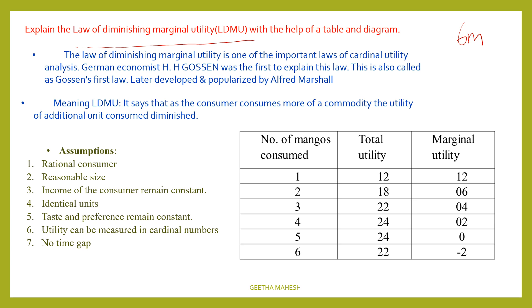The law of diminishing marginal utility is an important law in cardinal utility analysis. This law was first formulated by H.H. Gossen, a German economist. This is the first law of Gossen's.